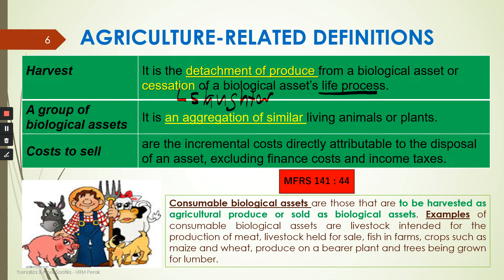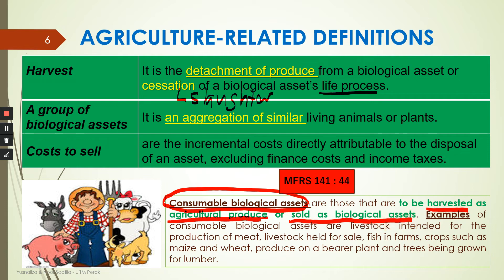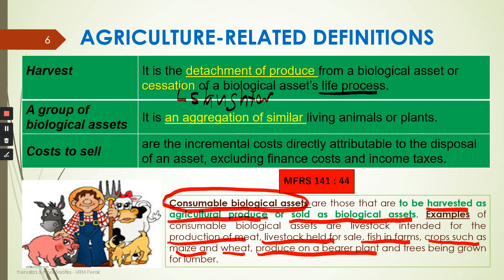Consumable biological assets refer to those that are to be harvested as agricultural produce or sold as biological assets — for example, a cow that gives birth to a calf which can later be sold. Examples include fish in farms, crops such as maize, wheat, durian, or mango, production of meat, and produce on a bearer plant.